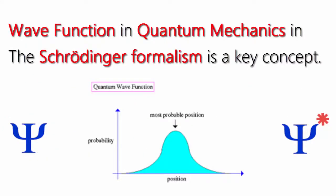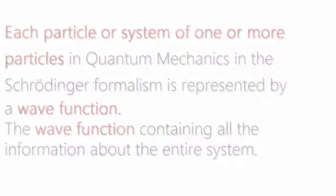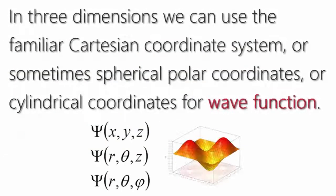Wave function in quantum mechanics in the Schrödinger formalism is a key concept. Each particle or system of one or more particles in quantum mechanics in the Schrödinger formalism is represented by a wave function. The wave function contains all the information about the entire system. In three dimensions we can use the familiar Cartesian coordinate system, or sometimes spherical polar coordinates, or cylindrical coordinates for wave function.